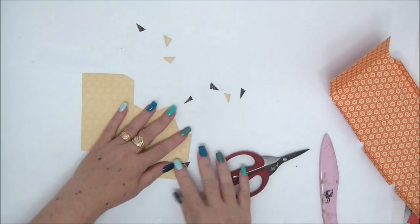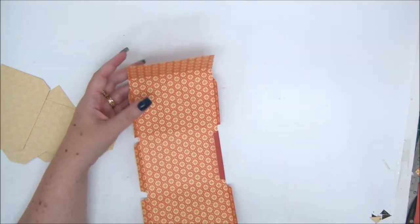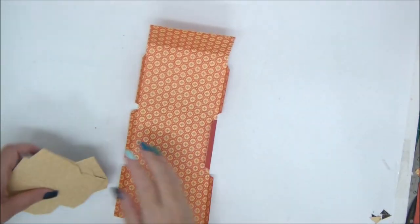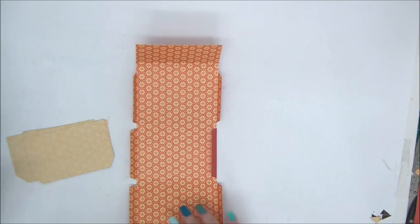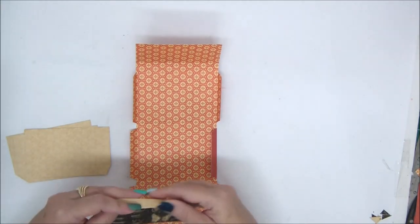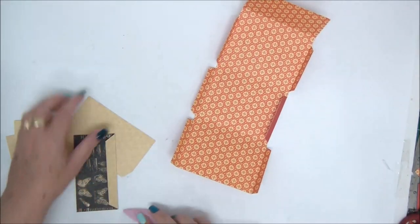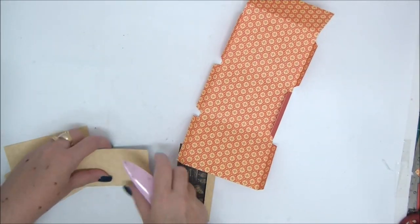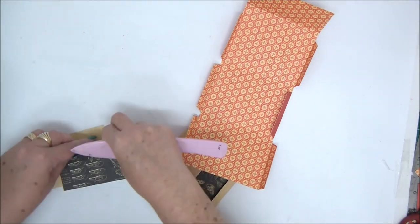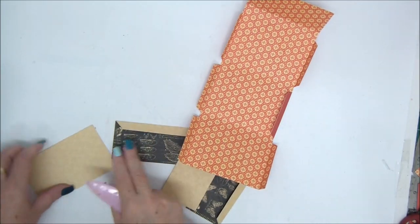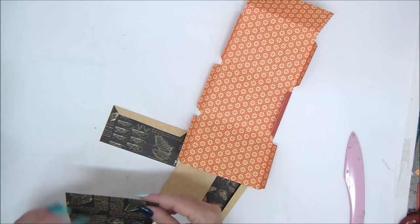Once we have cut all the corners, we can go ahead and bring some glue. I use liquid glue, you can use double-sided tape, whatever is more comfortable to you. We're going to start with the top pocket, fold the score line of course, then we're going to apply glue to that little flap and attach it to the envelope.